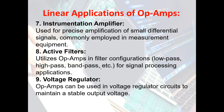The instrumentation amplifier is used for precise amplification of small differential signals, commonly employed in measurement equipment. Active filters utilize op-amps in filter configurations — low-pass, high-pass, band-pass, etc. — for signal processing applications. The low-pass filter is commonly used as a technique for filtering noise. We also have the voltage regulator, where op-amps can be used in voltage regulator circuits to maintain a stable output voltage.